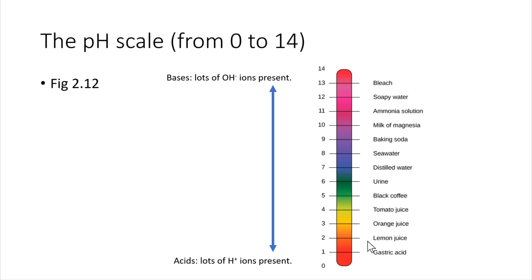On the lower end of the pH scale, these are all acidic things. Lemon juice, that's very acidic. It has a lot of hydrogen ions present. On the other end of the spectrum, we have basic things. Bleach is a very basic solution. Baking soda is basic as well. So the lower the number, the more acidic. The higher the number, the more basic.